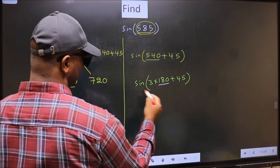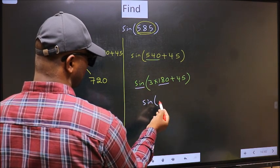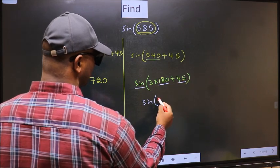Here we have 180, so sin is not going to change. It will remain sin. And inside, we get this angle 45.